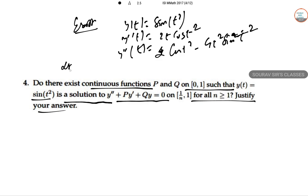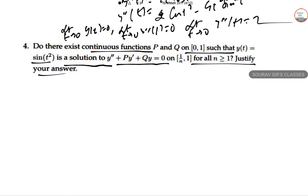Taking limits as t → 0: lim y(t) = 0, lim y'(t) = 0, and lim y''(t) = 2. Now we have all these values for t from 0 to 1.